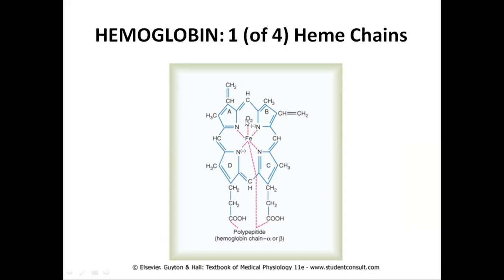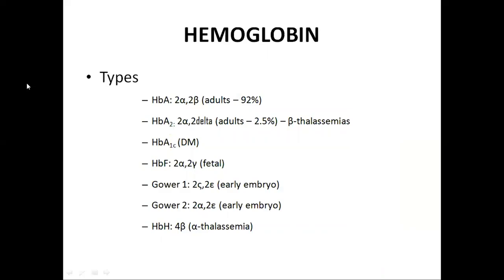Hemoglobin A is the adult hemoglobin present in almost 92% of adults, and it consists of 2 alpha chains and 2 beta chains. Each alpha chain is composed of 140 amino acids and each beta chain is composed of 146 amino acids. Hemoglobin A2 consists of 2 alpha chains and 2 delta chains instead of 2 beta chains. In alpha chains 140 amino acids are present, and in delta chains 10 amino acids are different from the beta chain. It is present in almost 2.5% of adults and mostly present in beta thalassemia.